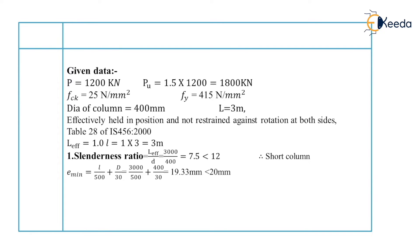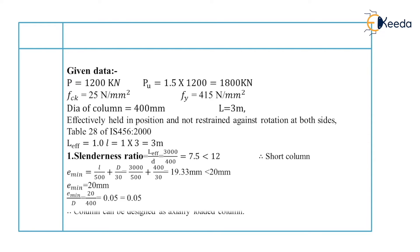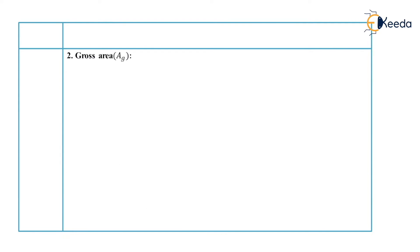Now we will check for minimum eccentricity, which is equal to L by 500 plus D by 30, which is equal to 19.33 mm. This is less than 20 mm, which is the minimum eccentricity required by IS456. So we will provide the minimum eccentricity at 20 mm. We will check the e_min by D ratio, which is equal to 20 upon 400, which is equal to 0.05. It is equal to the permissible value of 0.05. Therefore, we can design the column as an axially loaded column.